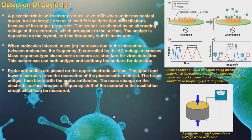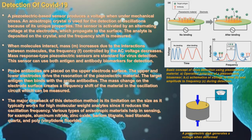Probe antibodies are placed on the upper electrode surface. The upper and lower electrodes drive the resonation of piezoelectric material. The target antigen then binds to the probe antibody. The mass change on the electrode surface creates a frequency shift in the oscillation circuit, which can be measured. The major drawback is its limitation on size — it typically works for high molecular weight analytes. Various piezoelectric materials include aluminum nitride, zinc oxide, and barium titanate. The first piezoelectric immunosensor was able to detect coronavirus in sputum.